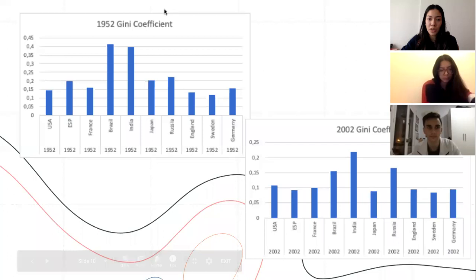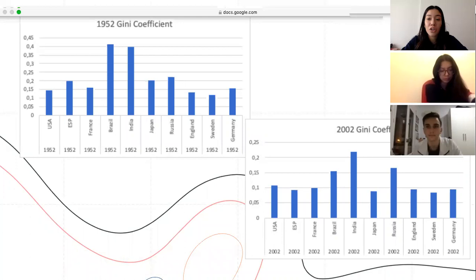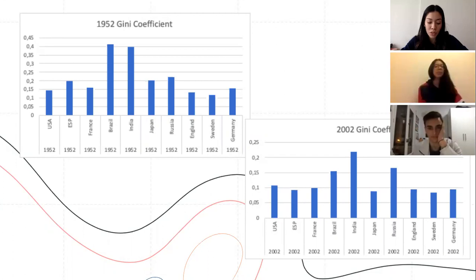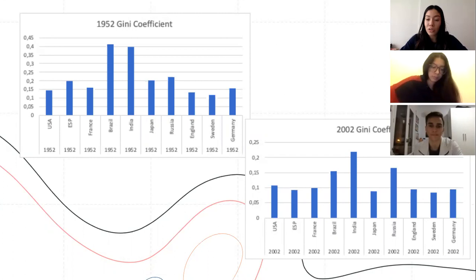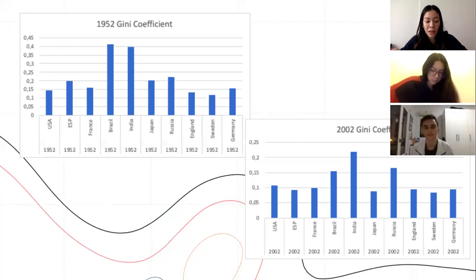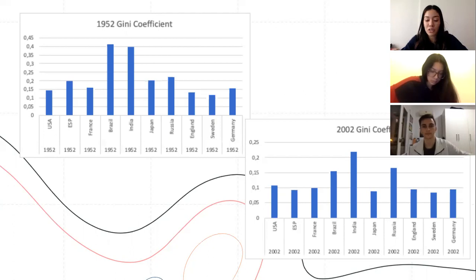To better understand the change, we created two ranking systems — one for 1952 and one for 2002. In 1952, the highest country was Brazil with 0.41, which is a warning level, while Germany was the lowest with 0.157, which represents near-perfect equality. In 2002, India had relative equality with a Gini coefficient of 0.22, and Sweden had 0.08, which is near-perfect equality. Both Brazil and India had the biggest change — over 0.2. For Brazil, this can be attributed to a better public health system, and for India, to better economic and demographic figures, resulting in a reduction in poverty and infertility.